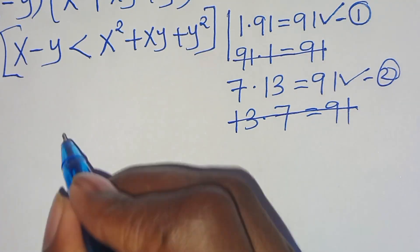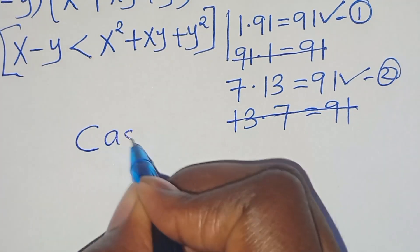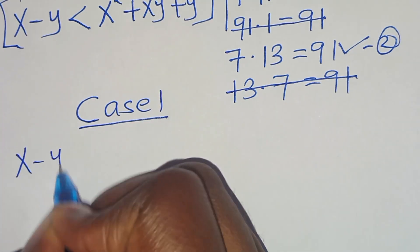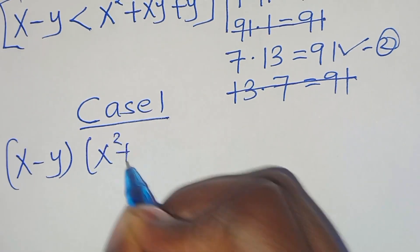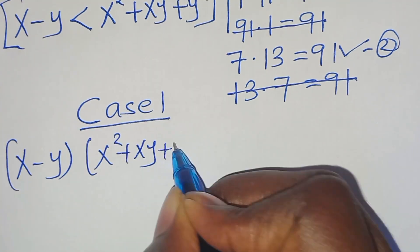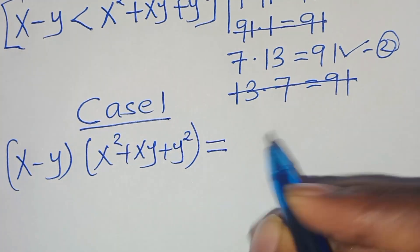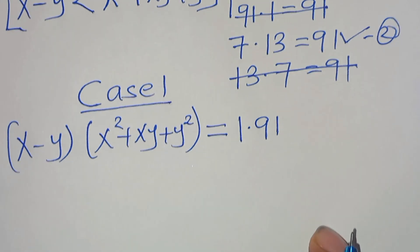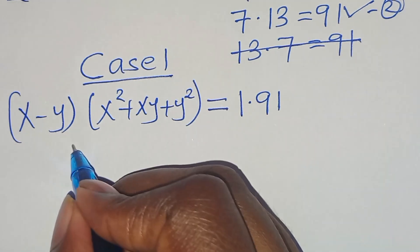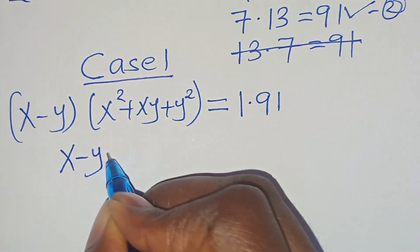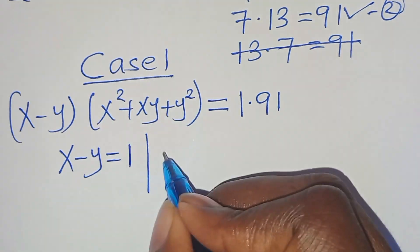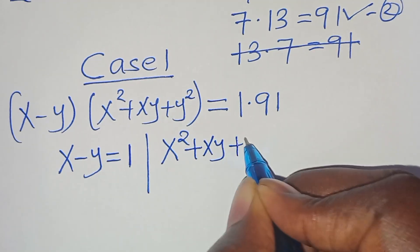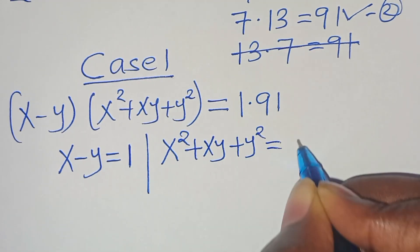Case 1: we have (x minus y) times (x squared plus xy plus y squared) equals 1 times 91. This implies that x minus y equals 1, and x squared plus xy plus y squared equals 91.